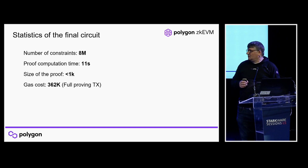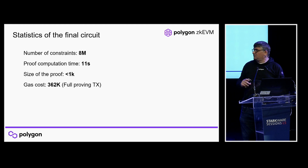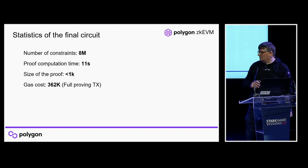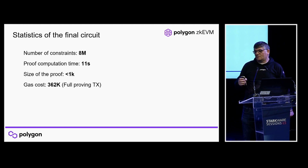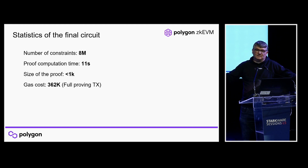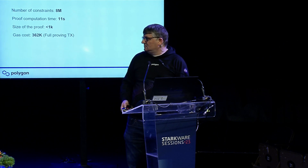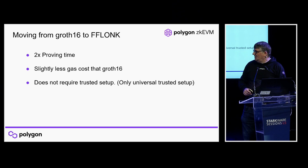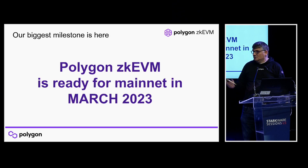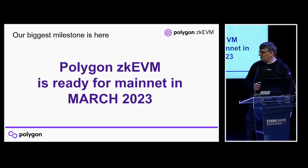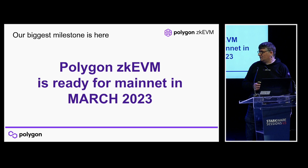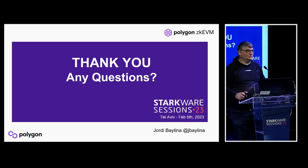We are also working on replacing Groth16 with Fflonk, which will have roughly the same gas cost but won't require a trusted setup. The proving time will be about 9–10 times slower, but since this is only the final aggregation step covering all batches, it's not a big issue. As an announcement: Polygon ZK-EVM is planning to launch mainnet in March 2023 — we are finishing the audits and everything is looking good.